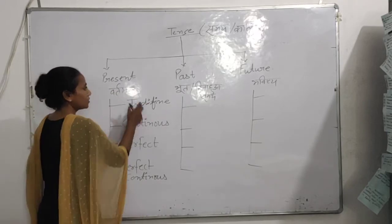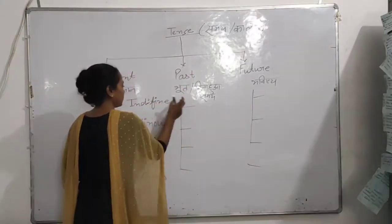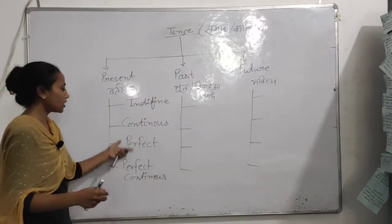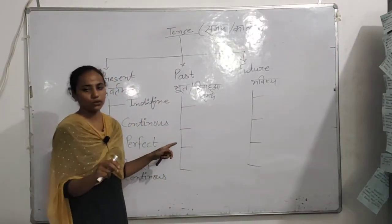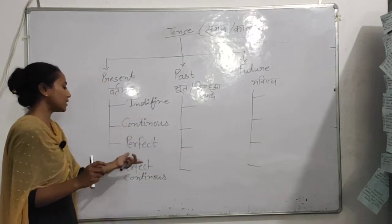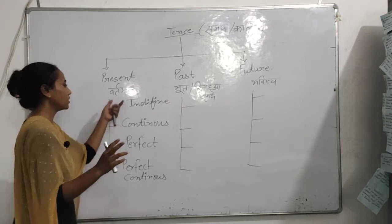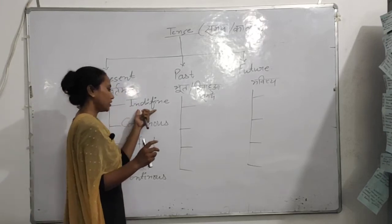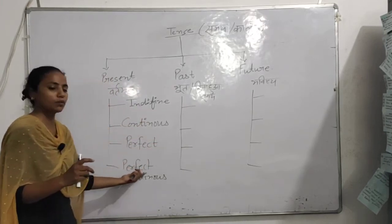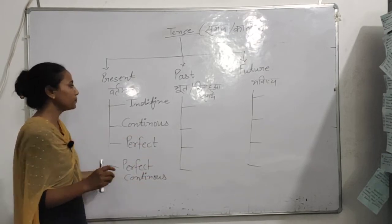ठीक है? तो आपको बस ये चारों याद करने हैं। जैसे Present Indefinite Tense, वैसे ही Past का पहला होता है Past Indefinite Tense — इस तरह से Future में भी होता जाएगा। तो ये चारों आपको याद हैं तो बारहों tense के नाम याद हो जाएंगे। Basically आपको चार याद करने हैं — Indefinite, Continuous, Perfect, और Perfect Continuous। Perfect Continuous इन दोनों को mix करके बना हुआ है।